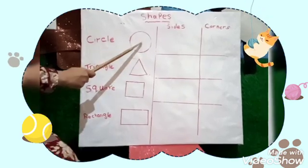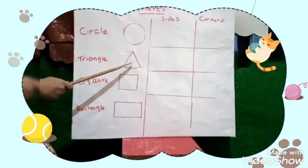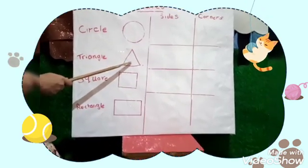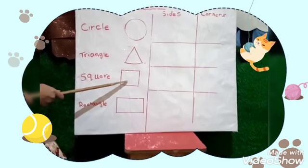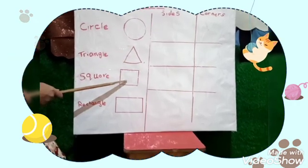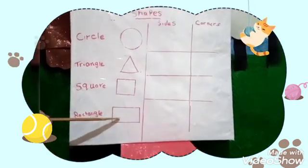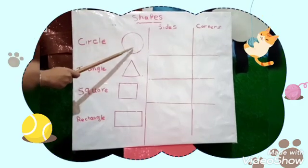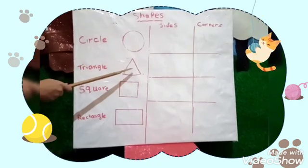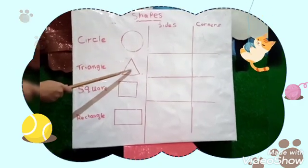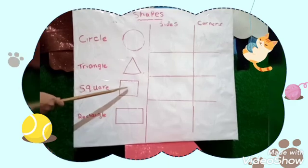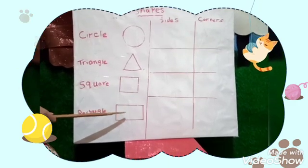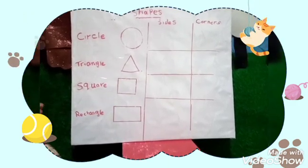What is this? Triangle. What is this? Square. Rectangle. Again: triangle, square, rectangle, rectangle.